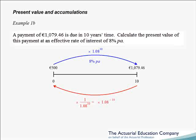This is called our discount factor — what we multiply the 1079 euros by to discount it, that is, to get the present value of this payment. In general, we denote this discount factor by V^n, i.e. what we multiply by to get the present value of a payment due in n years time. Our discount factor is simply 1 over our accumulation factor, so in general V^n is 1 over A^n, the accumulation factor we met in a previous unit.